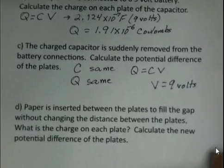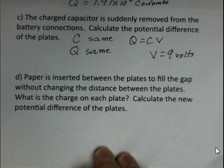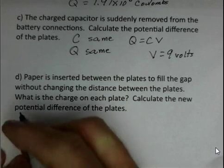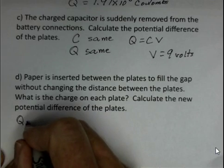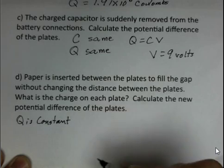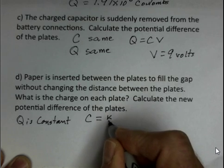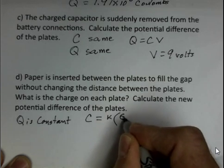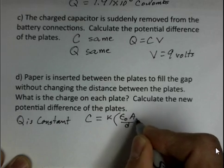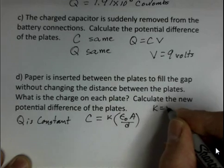What if we put paper, an insulator, in between the plates of the capacitor? We fill the gap and we don't change the distance between the two plates. The Q is constant. The capacitance value, however, changes. We've got this Kappa, the dielectric constant, multiplied on epsilon naught A over D. For paper, the Kappa value is 3.7. You can look that up, it's some kind of standard paper.